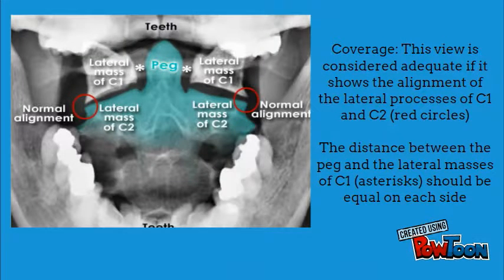The odontoid view is considered adequate if it shows the alignment of the lateral processes of C1 and C2. The distance between the peg and lateral masses of C1 should be equal on each side.